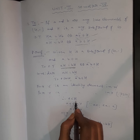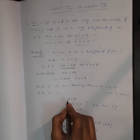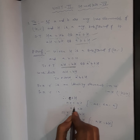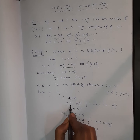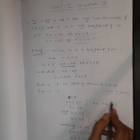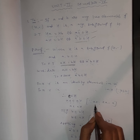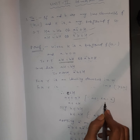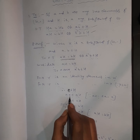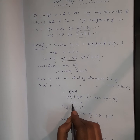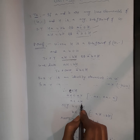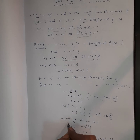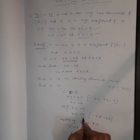Therefore E belongs to H. Multiplying with A on both sides, AE belongs to AH. Since AE equals EA equals A, we get A belongs to AH. Similarly, B belongs to BH.